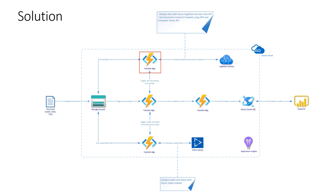That's for the PDF file. But if this is an audio or video file, another function is triggered. This function calls Azure Video Indexer Service, which is responsible for extracting insights about the audio or video file. We can get all the topics from the conversation, get tags, detect people in those videos, or extract sentiment values. In this solution, I extracted sentiment values from those different kinds of files and conversations.